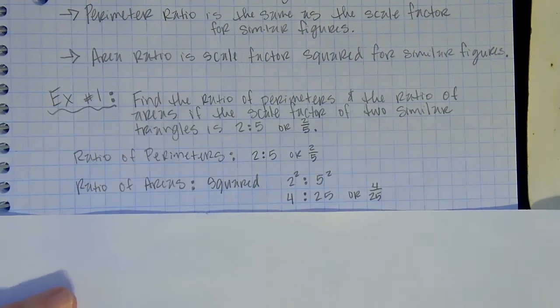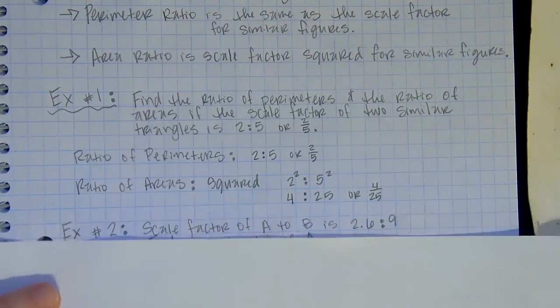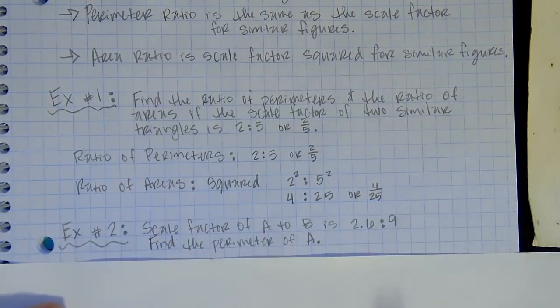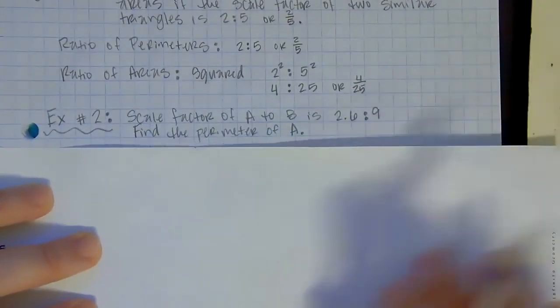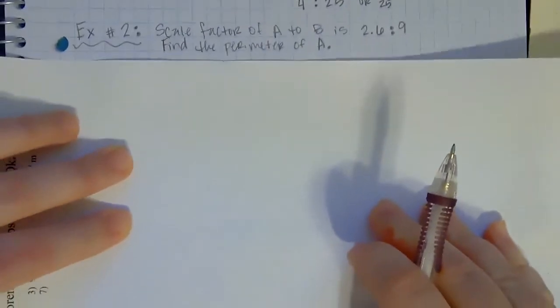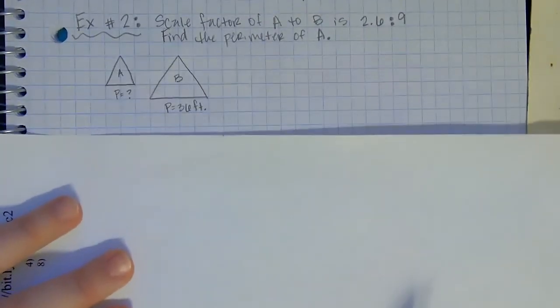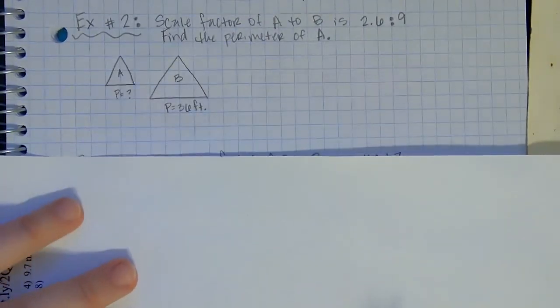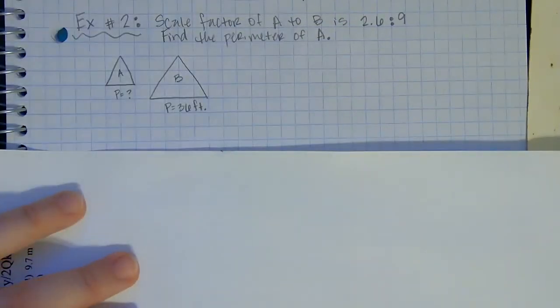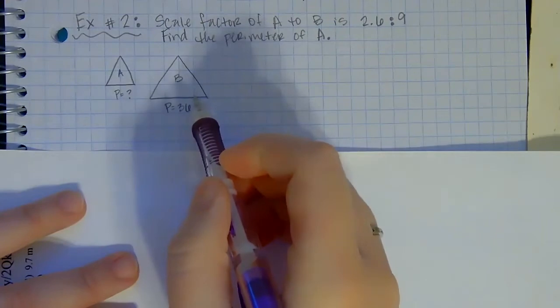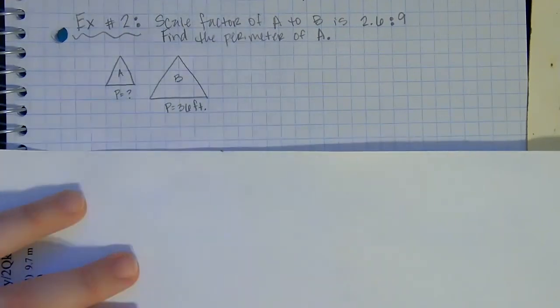Now let's do an example where we have to do some solving for some missing pieces. So this one says the scale factor of A to B is 2.6 to 9. Find the perimeter of A. So let's look at our pictures here. So here I have two pictures, I have A and B. Scale factor is 2.6 to 9, so I want to know what the perimeter is.